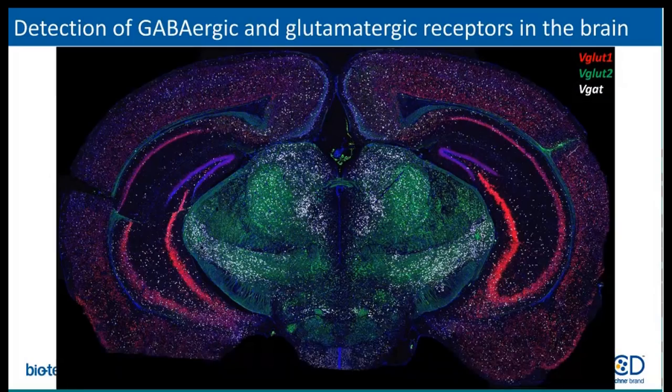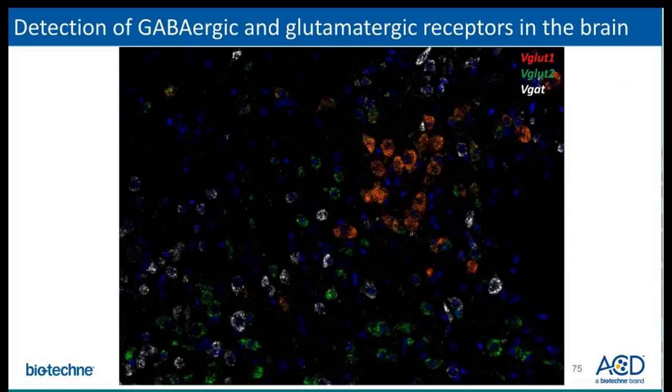Here is an image of the VGLUT1, VGLUT2, and VGAD receptors in FFPE mouse brain using the multiplex fluorescent V2 assay. And here is a high-magnification image of the same markers in the mouse brain.